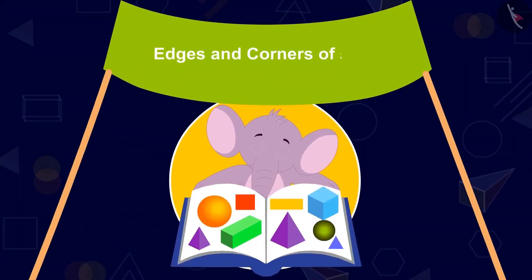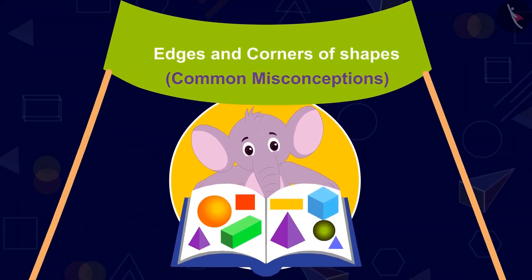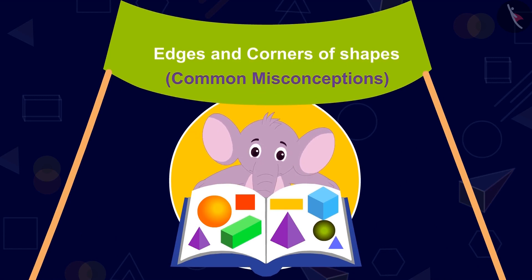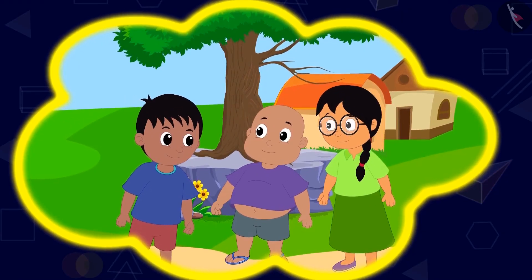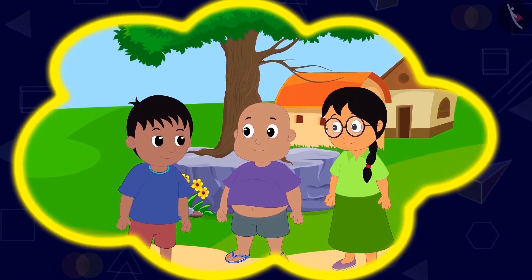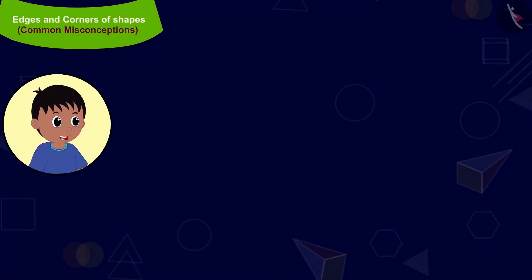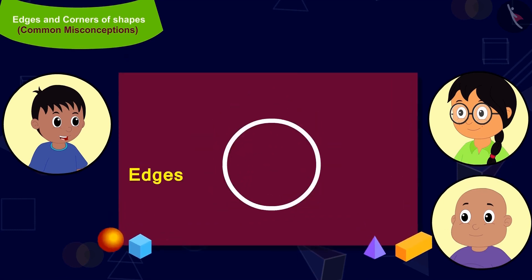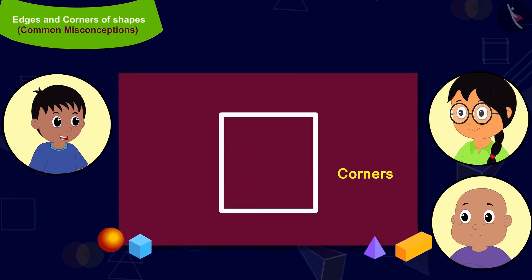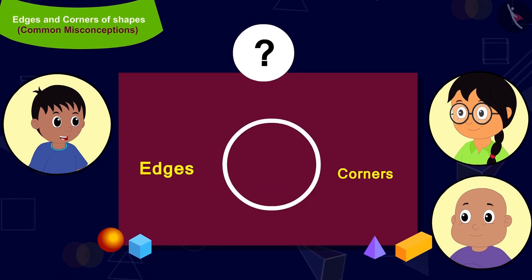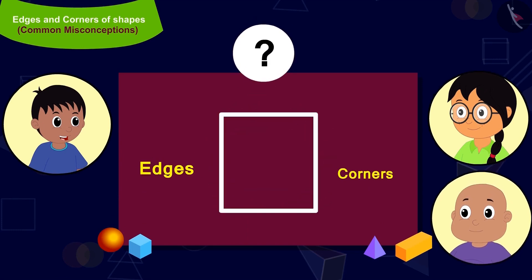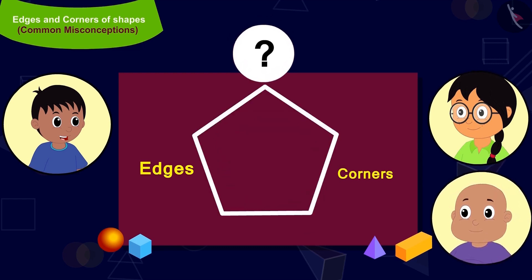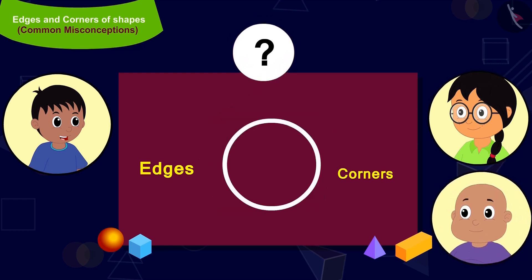In this video, we will see common mistakes related to the edges and corners of shapes. Raju, Bablu, and Minu are playing a unique game. Raju will tell Minu and Bablu the number of edges and corners of shapes, and Minu and Bablu will have to make a shape according to the question asked.